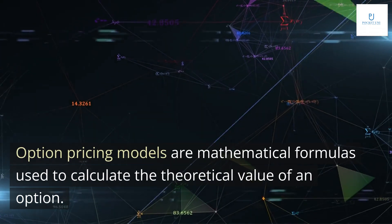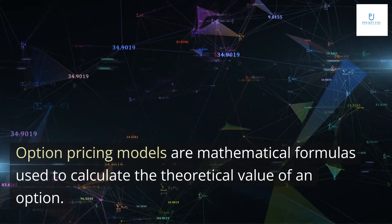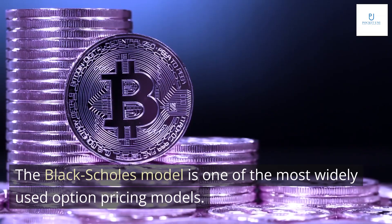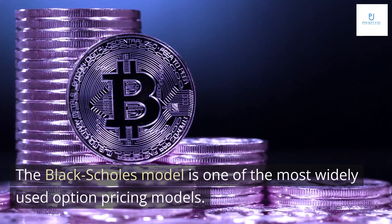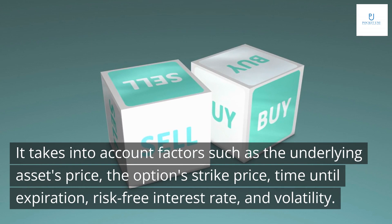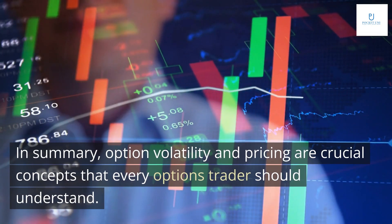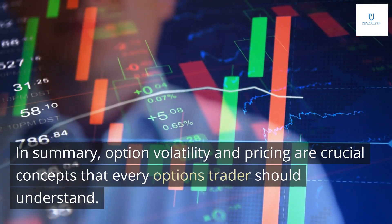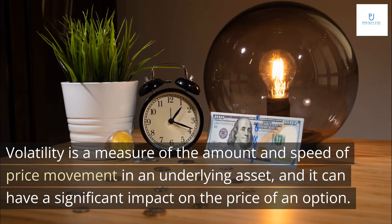Option pricing models are mathematical formulas used to calculate the theoretical value of an option. The Black-Scholes model is one of the most widely used option pricing models. It takes into account factors such as the underlying asset's price, the option's strike price, time until expiration, risk-free interest rate, and volatility.